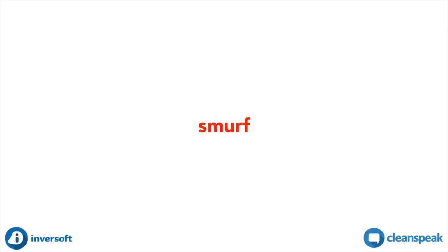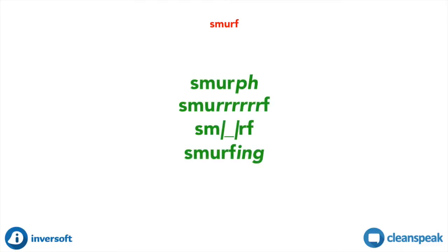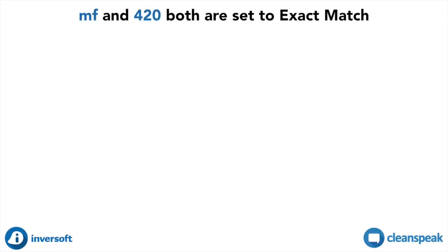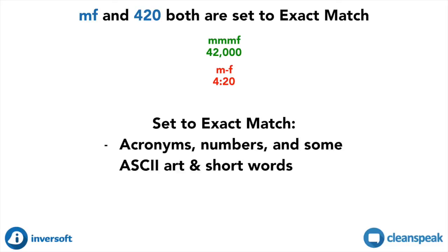The Exact Match filter mode takes it another step further and says: CleanSpeak, only treat this entry as a match if it is found exactly as it looks — do not go crazy with your baked-in intelligence. Exact Match still carries some intelligence: even though repeat characters, replacement characters, and other baked-in intelligence will be eliminated, punctuation will still be absorbed to create matches. For example, the acronym MF and the number 420 — we don't want the filter to find MMMMF or 42,000 because they lose their meaning, but we do want to find M-F and 4:20. Set acronyms and numbers to Exact Match, as well as some ASCII art.